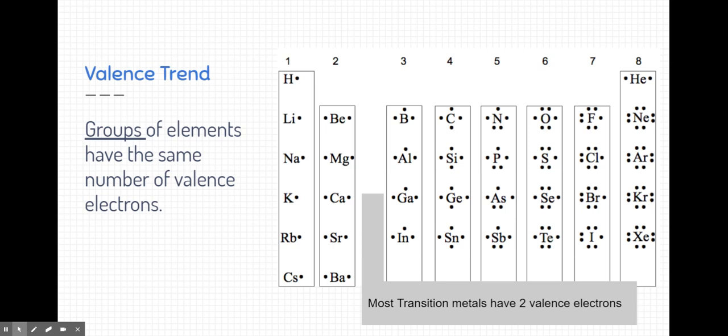they have three, group 14 have four, group 15 have five, group 16 have six, group 17 have seven, and group 18. All of them except for helium have eight, and that's because the first energy level only can hold two electrons, and helium only has two electrons in that energy level.